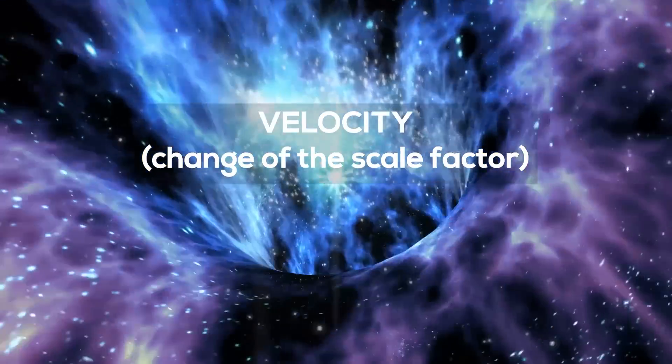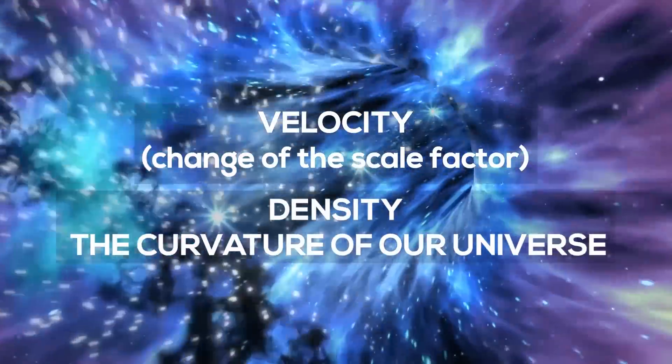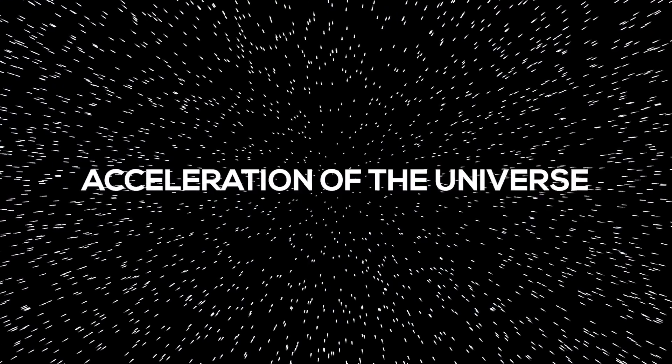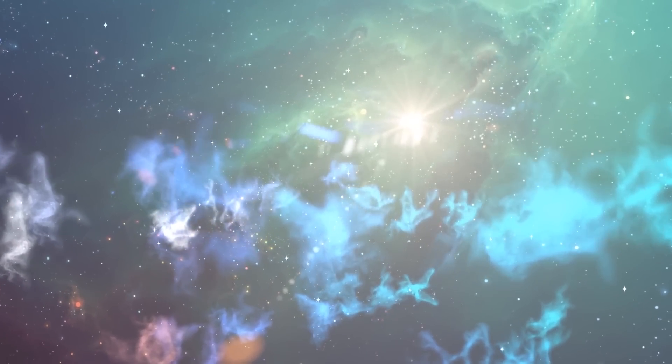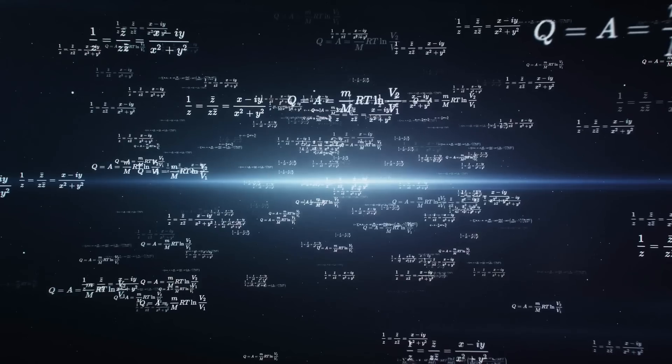The first one shows that the velocity, which is the change of the scale factor, is linked to the density and the curvature of our universe. The second Friedman equation deals with the acceleration of the universe, that results to be always negative. Consequently, the rate of expansion or contraction is slowing down with time.